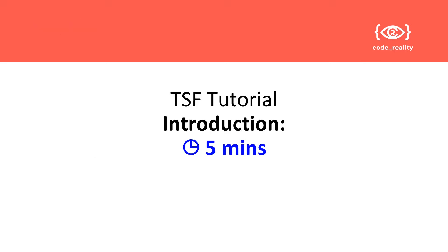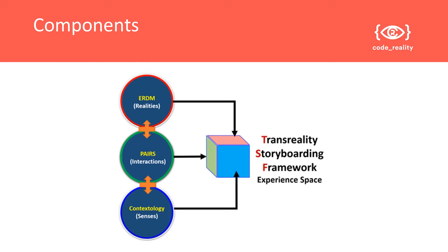Let's begin with a short introduction on the trans-reality storyboarding framework. It involves three components: the eight realities design methodology, which looks at the different realities people might want to work with, such as augmented or virtual reality; the PAIRS methodology, which covers the kinds of interactions you want to utilize, whether passive, interactive, or shared; and lastly, what kind of sensory engagement is involved — from physical senses but also from sensory data coming from sensors.